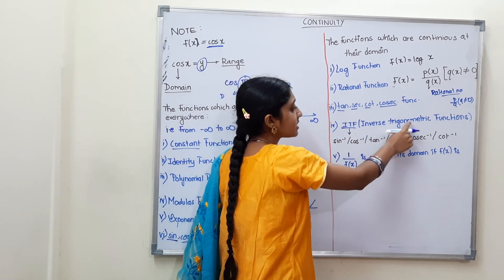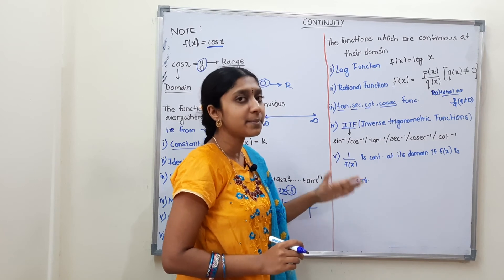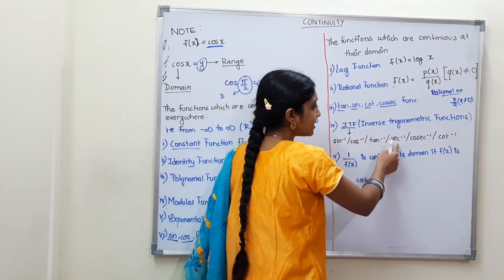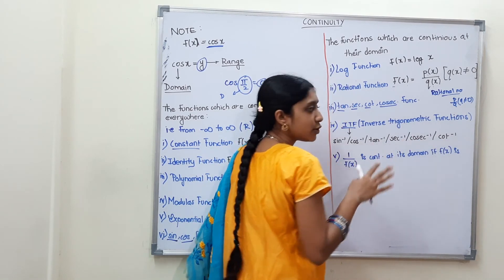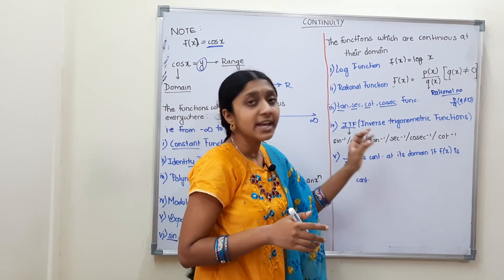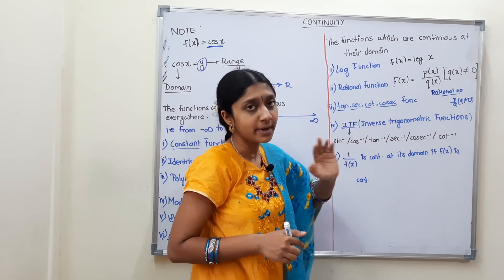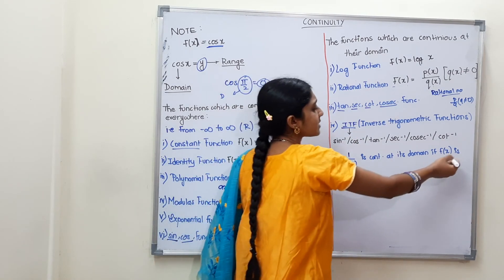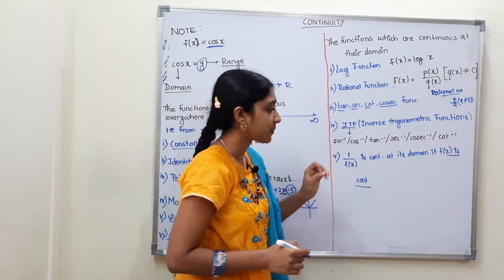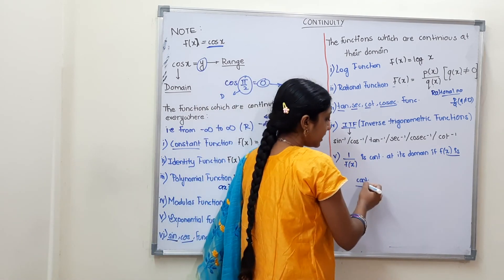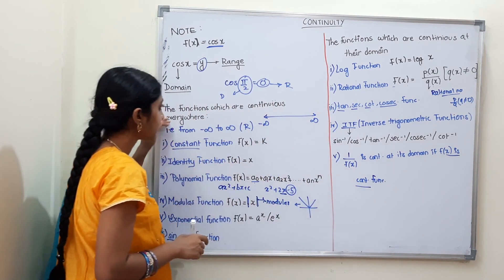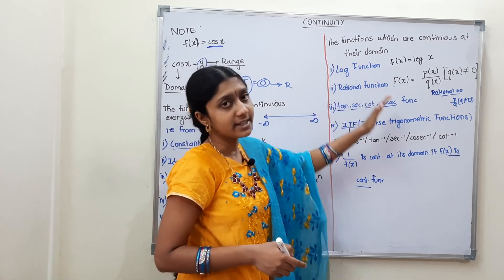Inverse trigonometric functions (ITF) — sine inverse, cos inverse, tan inverse, secant inverse, cosecant inverse, cot inverse — all six inverse trigonometric functions are continuous at their domain. Finally, if f(x) is continuous, then 1/f(x) is also continuous at its domain. So to summarize: some functions are continuous everywhere, and others are continuous only at their domain.